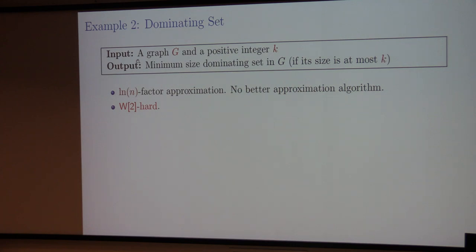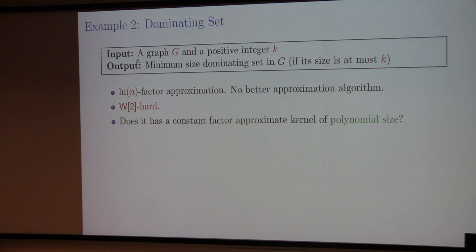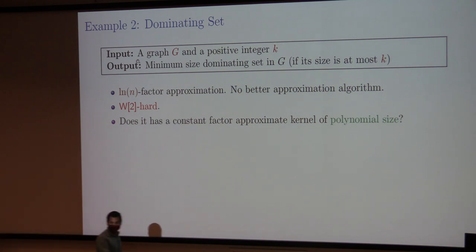The problem is W[2]-hard, but that won't prevent us from looking for an approximate kernelization — because in the last talk we saw a W[1]-hard problem (partial vertex cover) that has a polynomial-size approximate kernel, so a W[2]-hard problem could also have a kernel. Does it have a constant-factor approximate kernel of polynomial size? What is your guess?